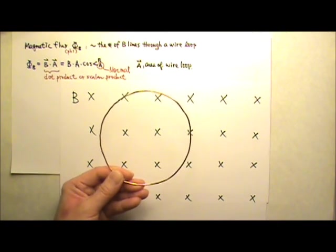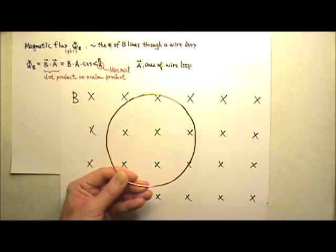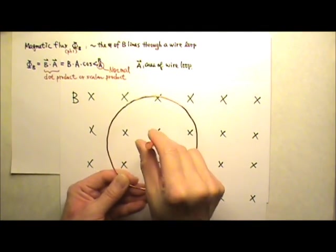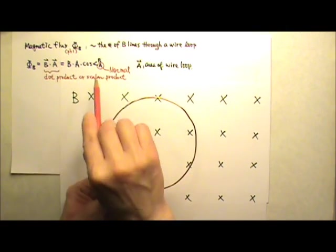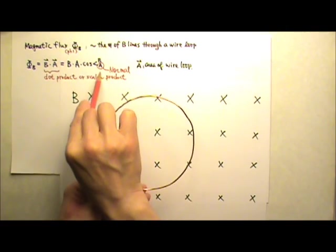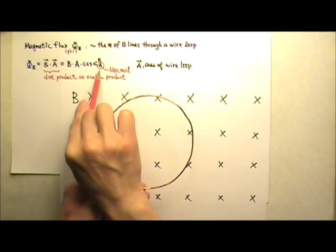For example, if the wire loop is like this, I can choose the normal vector going into the paper. So B and A are in the same direction. The angle between B and A would be 0 degrees, and cosine 0 degrees is 1.